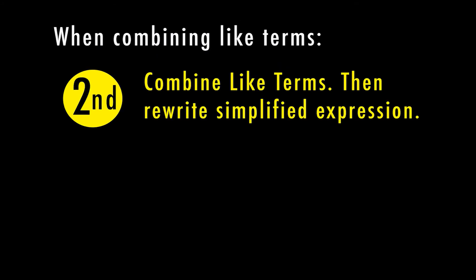For step 2, I'm going to actually combine my like terms, which means I'm going to rewrite the simplified expression. This is an expression — we didn't talk about this before — but it's an expression because there is no equal sign. We have terms separated by pluses and minuses, and there are variables included. We're not actually solving anything at this point because it doesn't tell us what x equals or what the expression equals. We're really just making it simplified or easier to work with in another process.